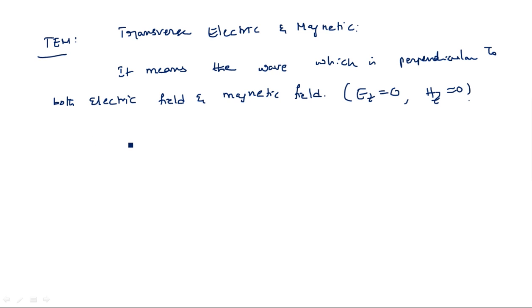You can understand from the wave equation that if you substitute Hz = 0 and Ez = 0 into the wave equation, the entire output becomes zero — the wave equation becomes zero. That means the transverse electric and magnetic field does not exist in that case. So these are the modes and the rectangular waveguide introduction, covering the different types of modes that exist. In the next class, I will start the solutions for the wave equations and the propagation of waves in TE and TM modes. Thank you.